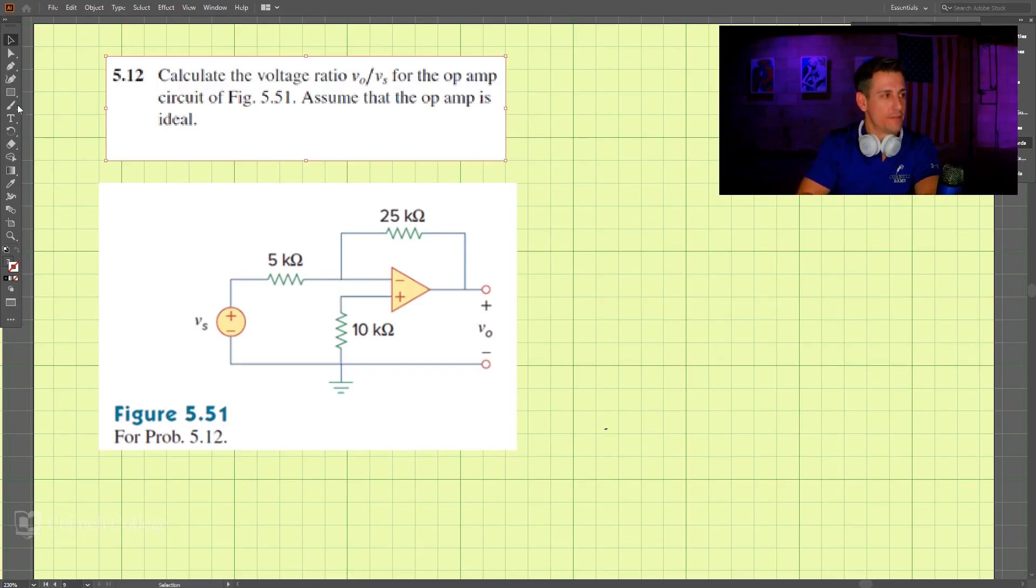Here is 512, and in 512, what we're looking for is the voltage ratio, so we're trying to find V0 divided by VS. That's what we're looking for. Assume the op amp is ideal.